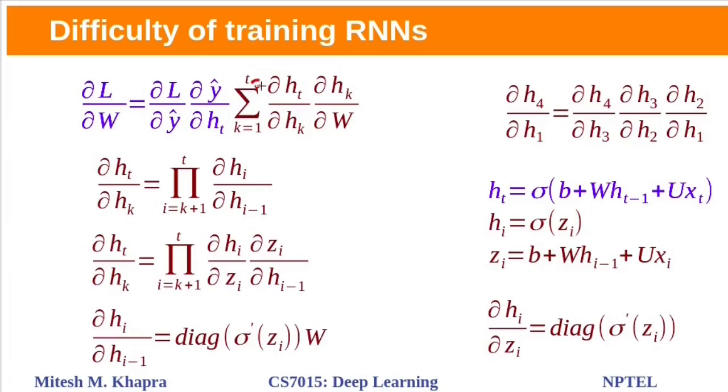If this t equal to 4 and k equal to 1, then this term would be dou h4 by dou h1, partial derivative of h4 with respect to h1 is product of these terms.